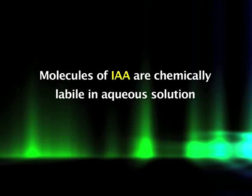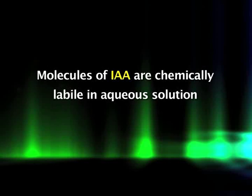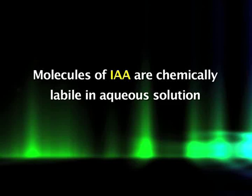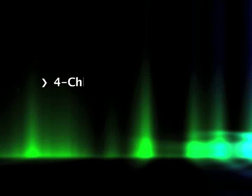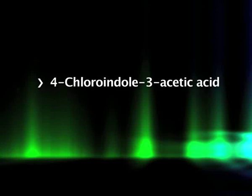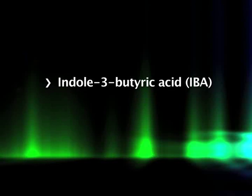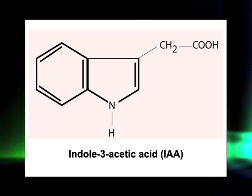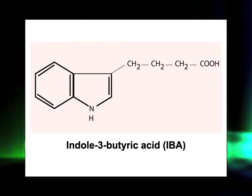However, IAA molecules are chemically labile in aqueous solution, so it is not used commercially as a plant growth regulator. IAA is found in all plants, but other related compounds with auxin activity have also been identified. For example, 4-chloroindole-3-acetic acid is present in peas, whereas indole-3-butyric acid (IBA) is present in mustard and corn. All these are classified as natural auxins, including IAA and IBA.